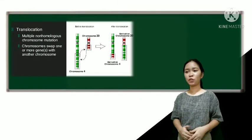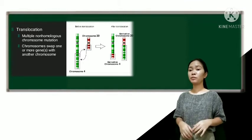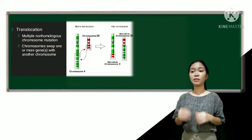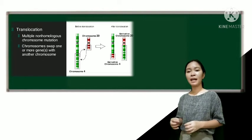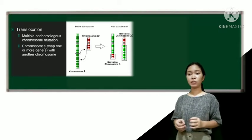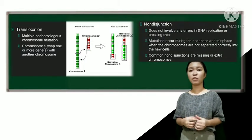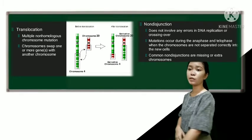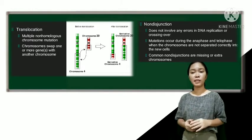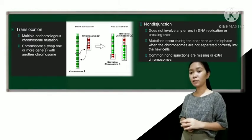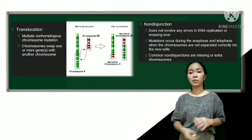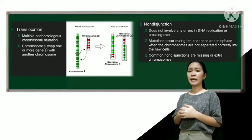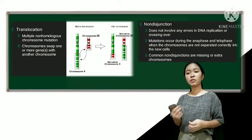So lastly, it's the translocation and non-disjunction. So the large-scale translocation mutation also involves multiple non-homologous chromosomes. Here, the chromosomes swap one or more genes with another chromosome. And also, we have a large-scale non-disjunction mutation which does not involve any errors in DNA replication. But instead, these mutations occur during anaphase and telophase when the chromosomes are not separated correctly into the new cells. Common non-disjunctions are missing or extra chromosomes. Like for example, when gametes with non-disjunctions are produced during meiosis, it can result in offspring with monosomy or trisomy.